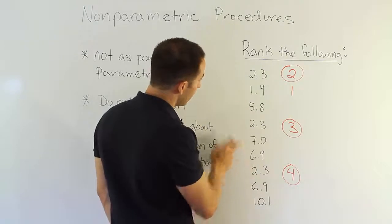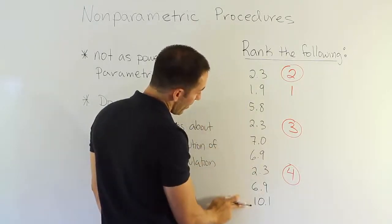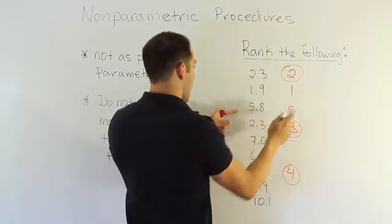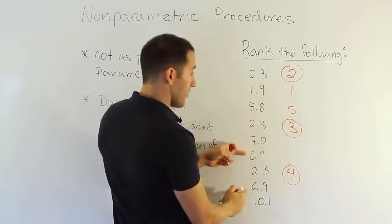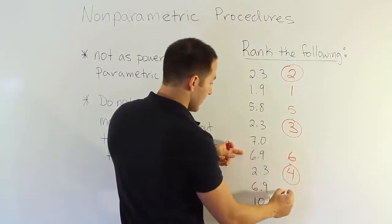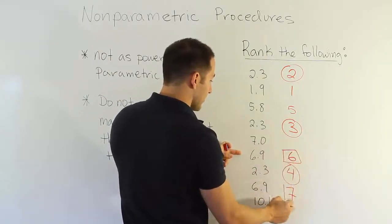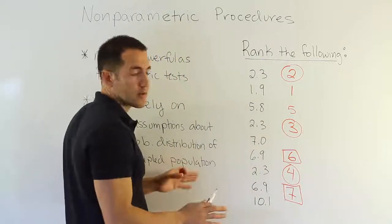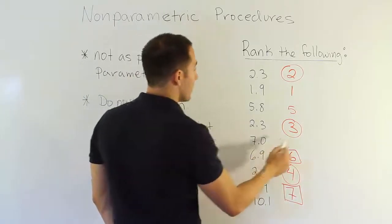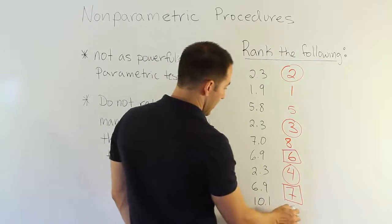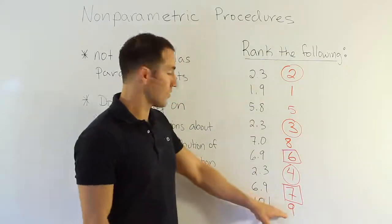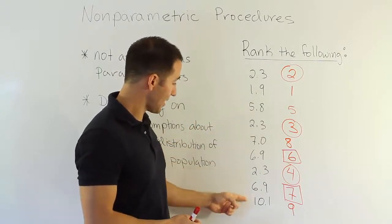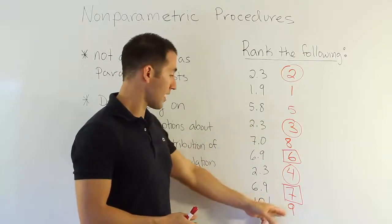Looking further down: anything in the threes? No. Fours? No. Fives? Yes, there's a 5.8 — no other fives, so that gets rank 5. We've used ranks 1 through 5. Anything in the sixes? Yes, a couple of 6.9s — same value. I'll give those ranks 6 and 7, and put squares around them to remind me they're tied. Then rank 8 and rank 9 for the remaining values. Our last rank equals 9, which matches our 9 numbers — good.